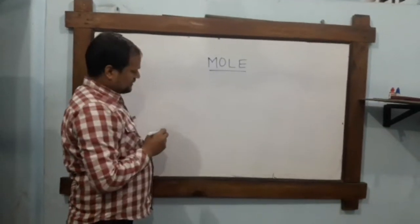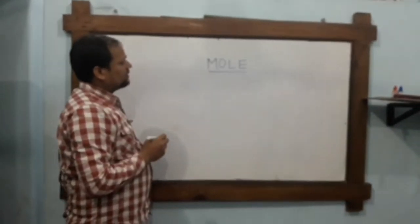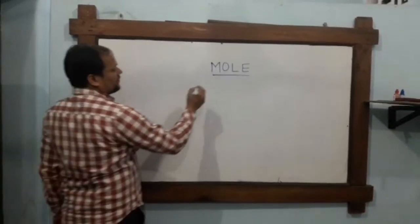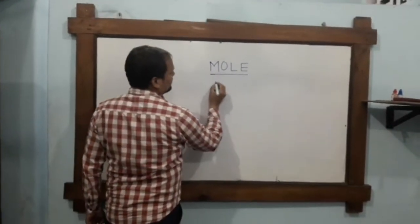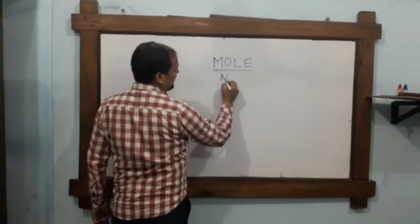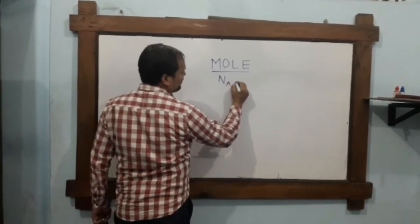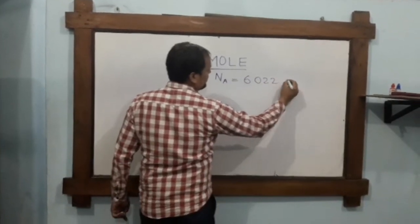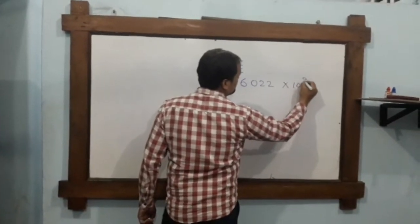Mole is a very interesting topic in class 9 chemistry, which is represented as Avogadro's number, Na or N₀, and it equals 6.022 × 10²³.